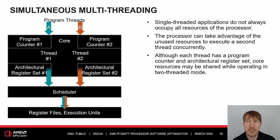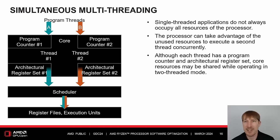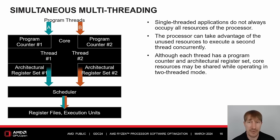To improve instruction throughput, the processor implements simultaneous multithreading. Single-threaded applications do not always occupy all the resources of the processor, so the processor can take advantage of unused resources to execute a second thread concurrently. Although each thread has a program counter and architectural register set, core resources may be shared while operating in two-threaded mode. Disabling SMT in system BIOS menu options will reduce the number of logical processors and limit cores to operate only in single-threaded mode.